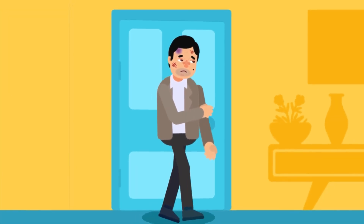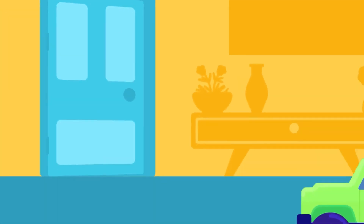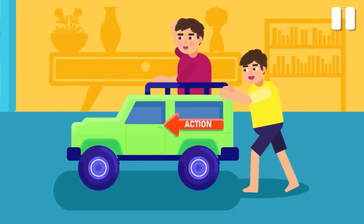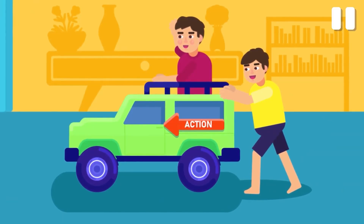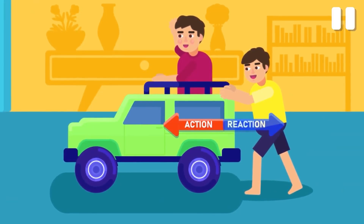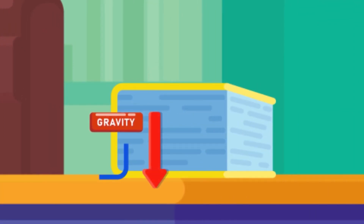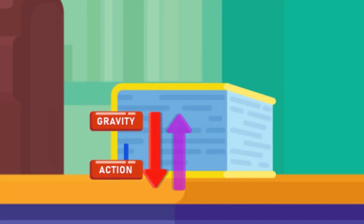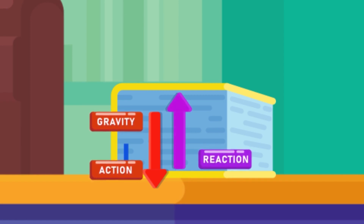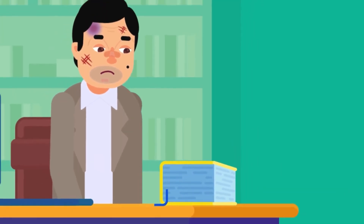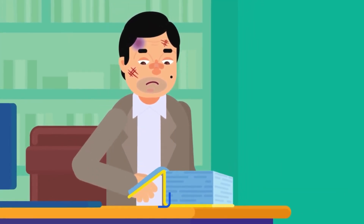This law can be understood with the following examples. When someone pushes an object, he will feel some force on his hand, as if the object is pushing him back. If a book is placed on a table, the book's weight — the gravitational pull of the earth on the book — acts downward. At the same time, the table's reaction force, or the normal force, acts upwards with the same magnitude. Hence, the book remains stationary, not falling to the earth.